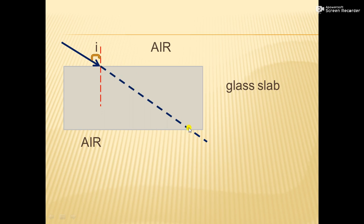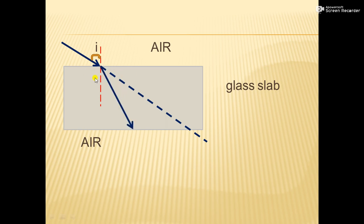If there is no glass slab, this would be the actual path of the light ray. But here there is a medium change from air to glass — that means from rarer medium to denser medium. So the light ray slows down and bends towards the normal. The angle between the refracted ray and the normal is the angle of refraction.